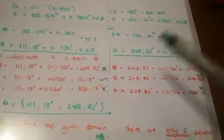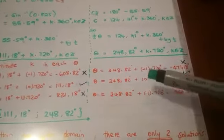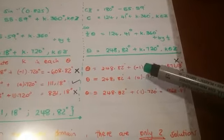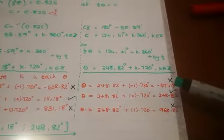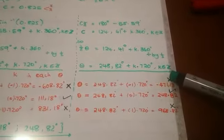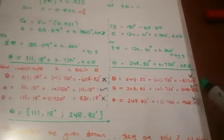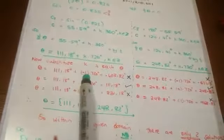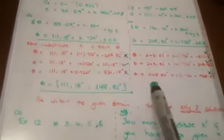And then we move on. We do the same on the right-hand side. We substitute K equals negative 1, 0, and 1. Then again, if you check here, negative 471.18 doesn't qualify, this one qualifies, this one also doesn't qualify. So that means in the given domain, negative 360 to 720, there are only two solutions.